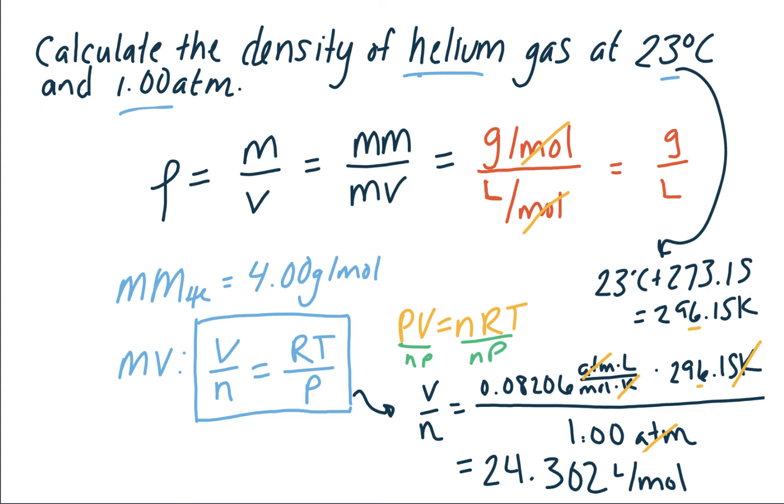All right, so we can finally answer our question, what is the density, by taking these two pieces of information, the molar mass and the molar volume, and dividing them. So the density is equal to the molar mass divided by the molar volume. The molar mass of helium is 4.00 grams per mole.